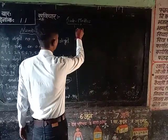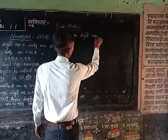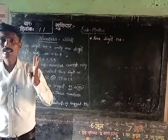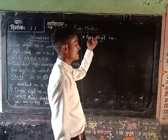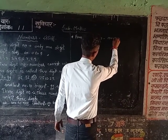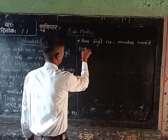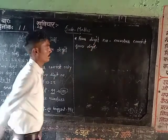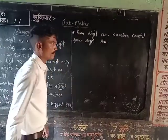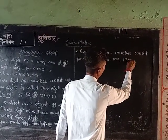Now we are studying the 4-digit number. What do you mean by a 4-digit number? A 4-digit number consists of 4 digits. For example, 1,000 and 1,255, etc.